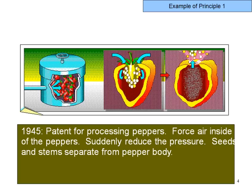To give an example, there was a patent in 1945 for processing peppers. Peppers have an outer shell with a small annular cavity between the shell and the actual pepper. The problem was how to break it open without breaking the pepper. The solution was to put all the peppers inside a can, apply gas under high pressure, then suddenly reduce the pressure. The high-pressure gas that entered the annular cavity bursts the shell open.